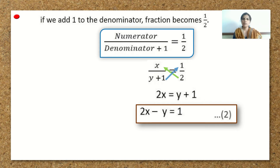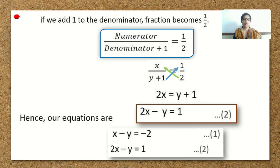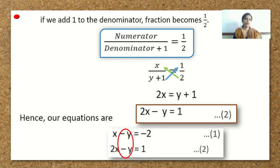Once you get both equations, solving the sum becomes easy. We have written them one below the other. If you observe both equations, the coefficient of y in both equations is the same — it is minus 1 in the first equation and again minus 1 in the second equation. When we solve by the elimination method and the coefficients have the same sign, we subtract one equation from the other.